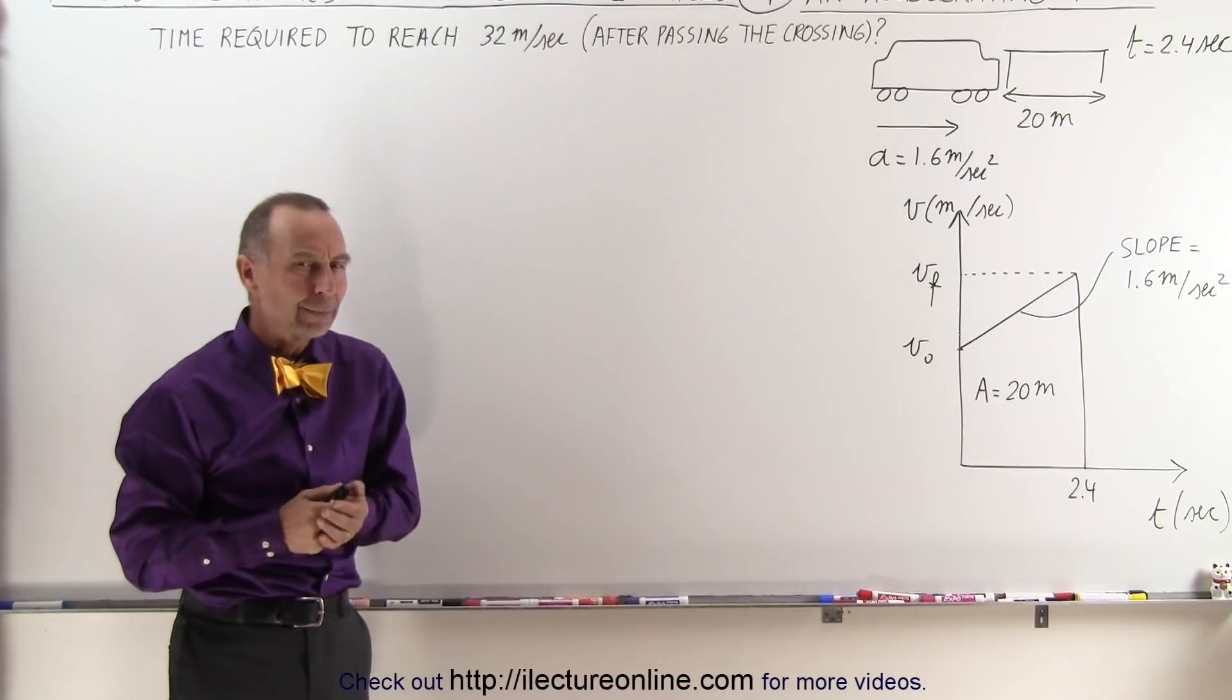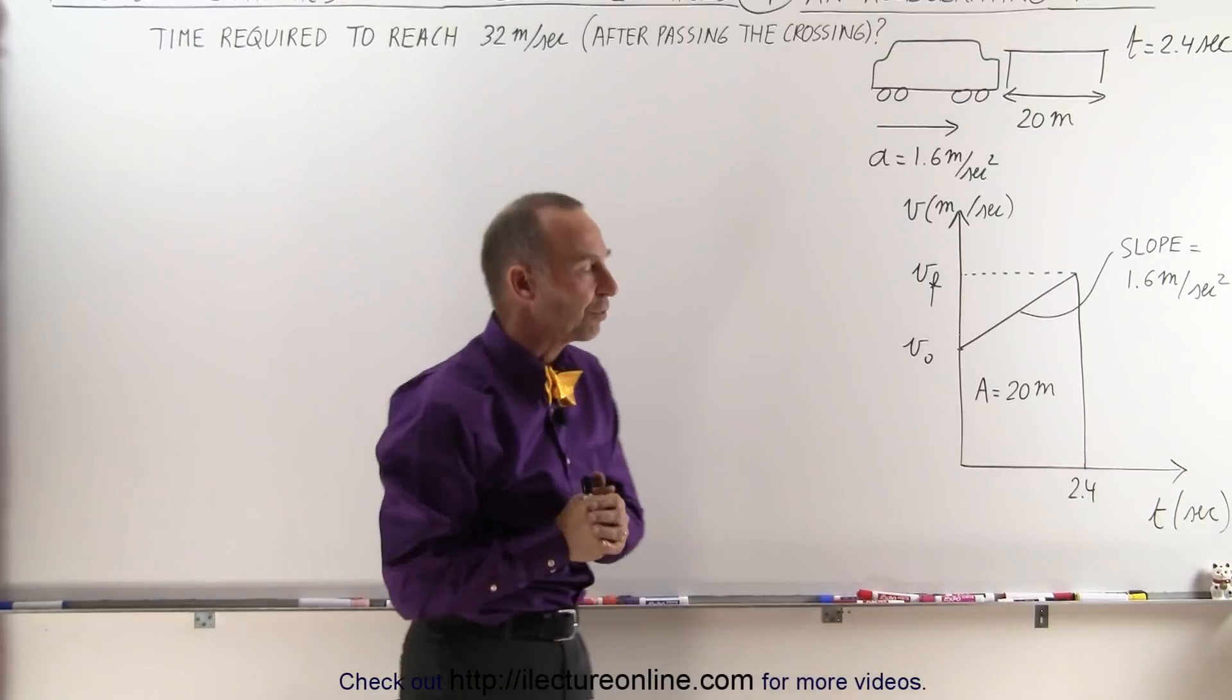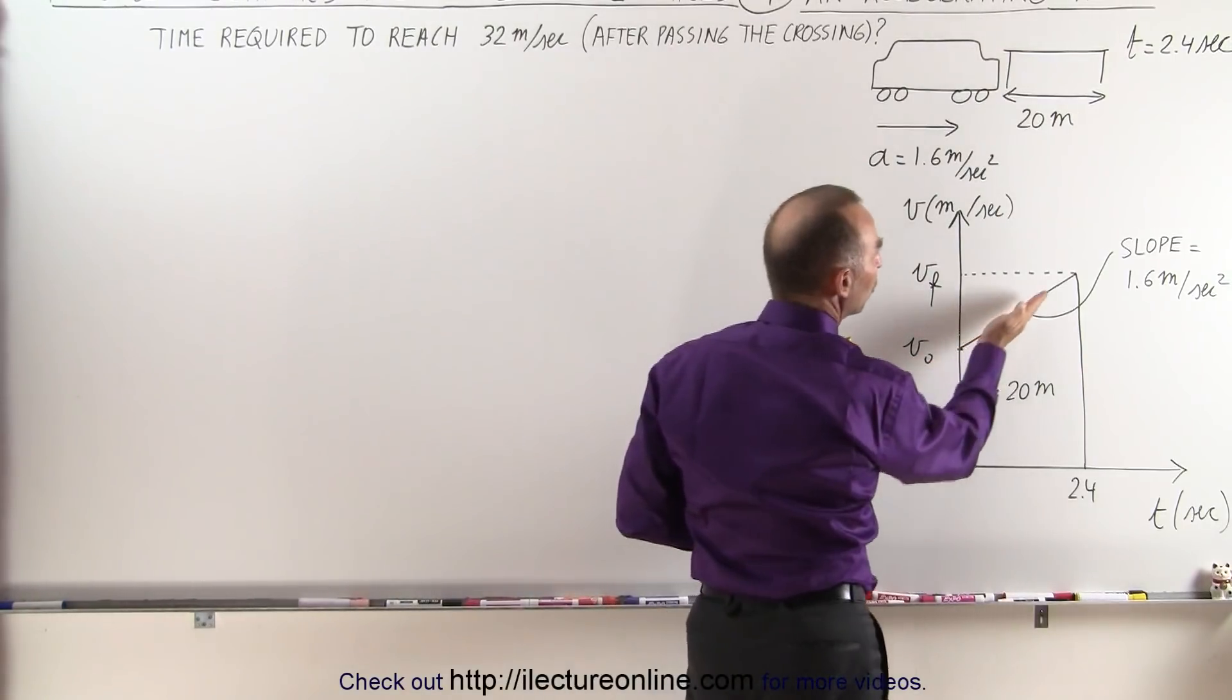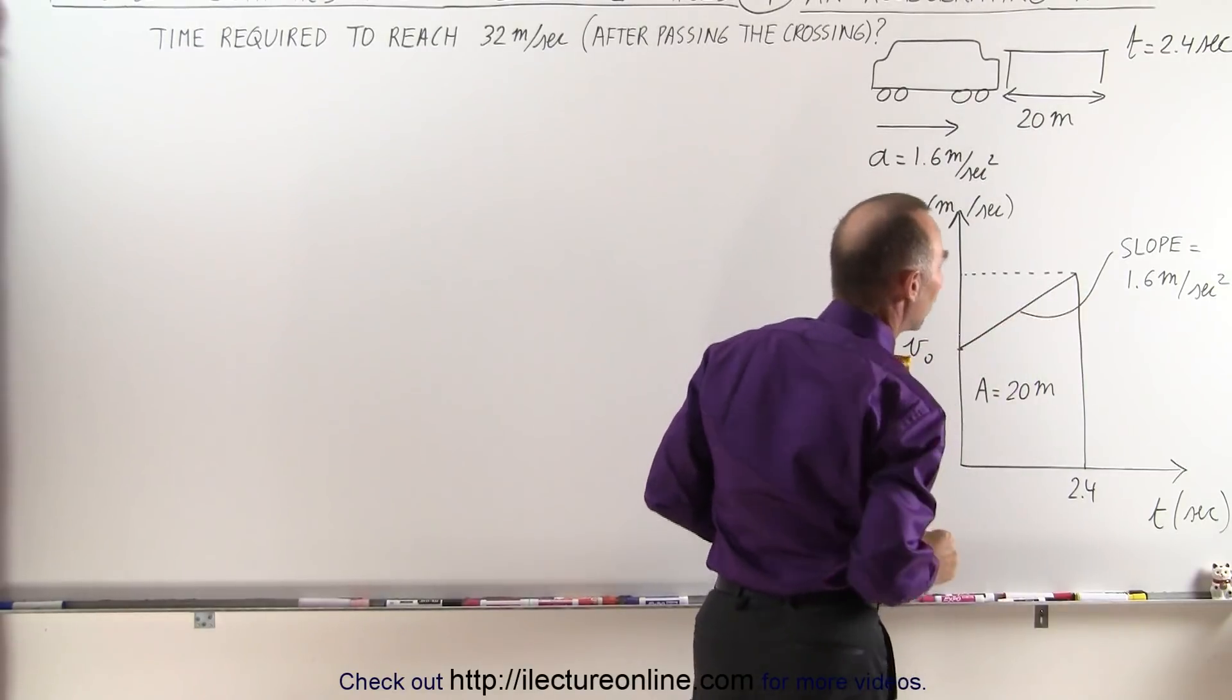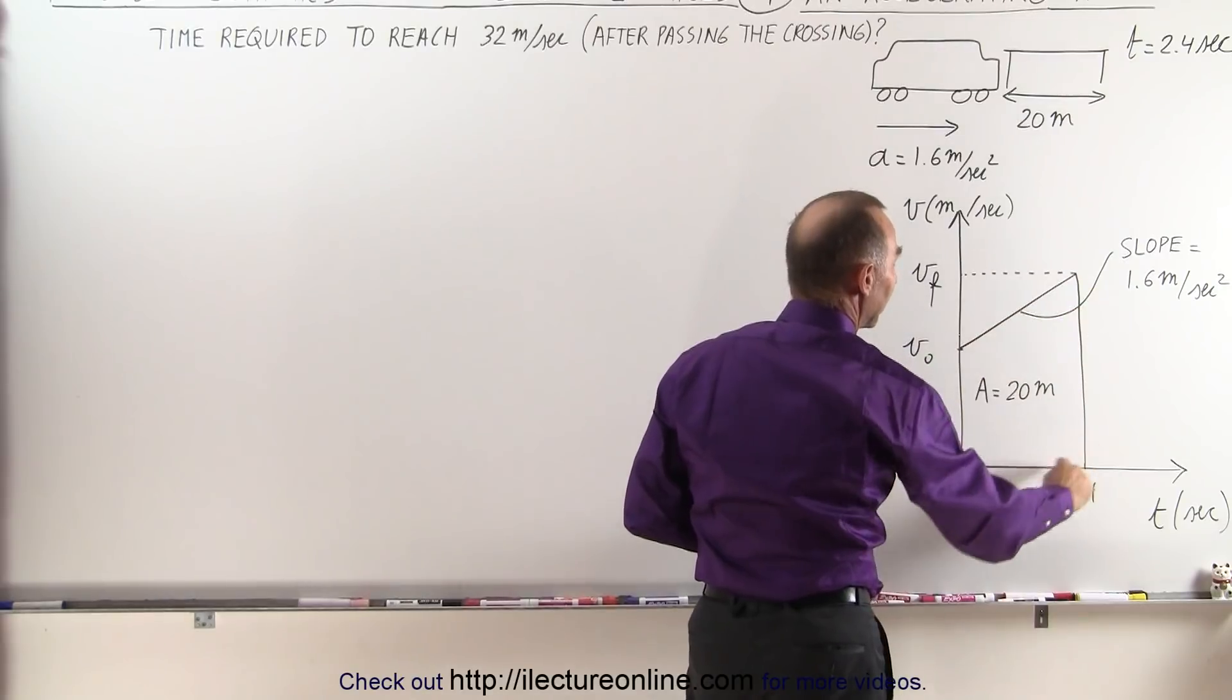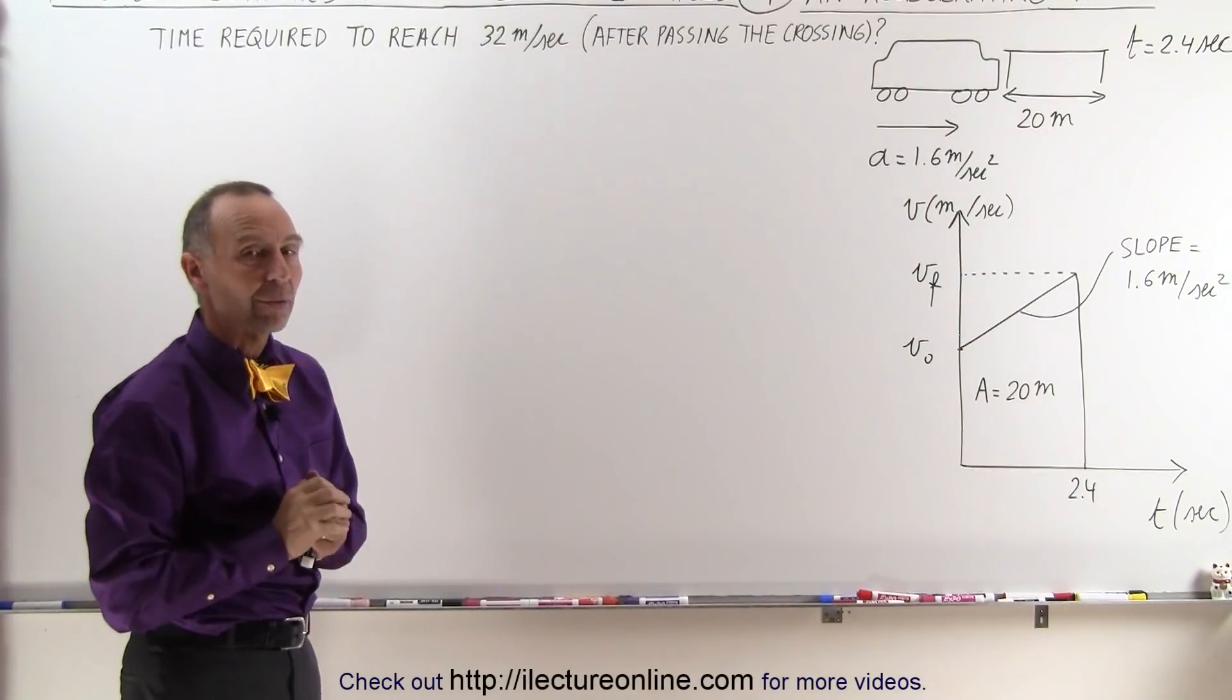So how do we do that? A good start is to draw a velocity versus time graph that gives us a graphical perspective of the problem. We don't know the initial velocity or the final velocity, but we do know that the acceleration is 1.6 meters per second squared, so the slope equals 1.6. We also know that during that 2.4 seconds, the train travels 20 meters, which shows that the area underneath the curve must equal 20.